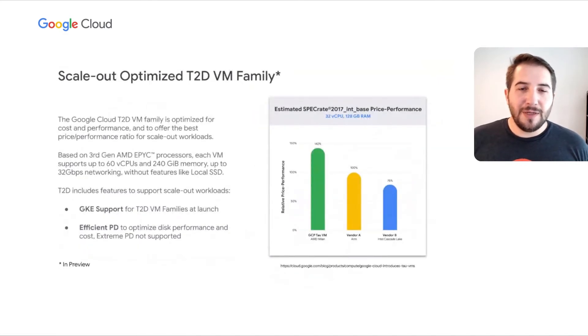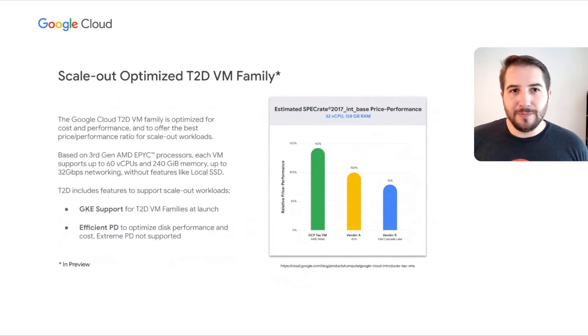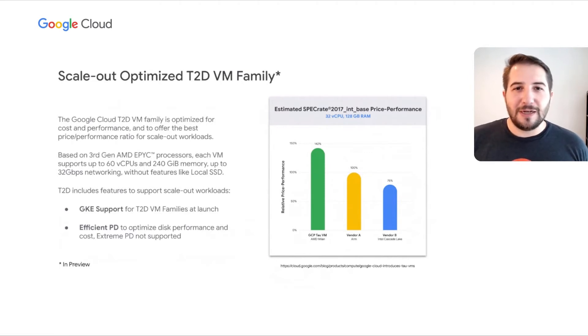The T2D VM family is powered by AMD EPYC third-generation processors. T2Ds are built for scale-out workloads — each VM offers 60 vCPUs and 240 gigabytes of memory, optimized for price-performance rather than advanced features like advanced networking or local SSDs. They support GKE at launch for containerized HPC users and offer efficient persistent disk tiers for the best price-performance storage. T2Ds offer a 42% better price-performance compared to other leading cloud providers, making them a great fit for scale-out HPC workloads like financial simulations.